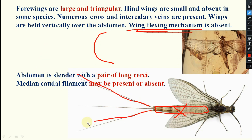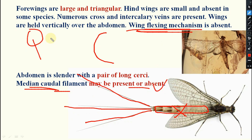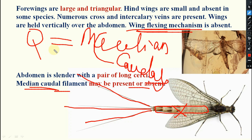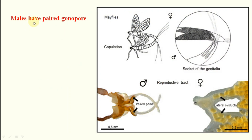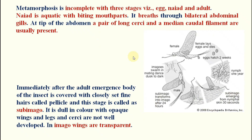The abdomen is slender with a pair of long cerci and a median caudal filament, which is absent in some species. Median caudal filament is found in silverfish (Thysanura) and also in Ephemeroptera. Males have paired gonopores — forked or divided — which is very important to remember.